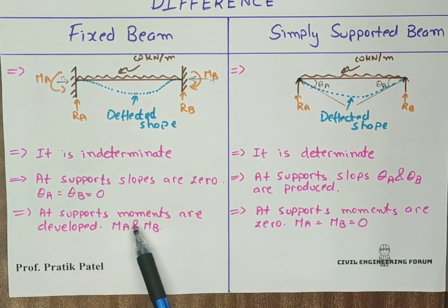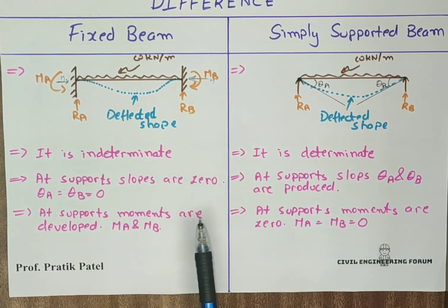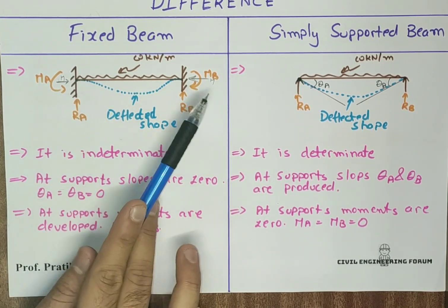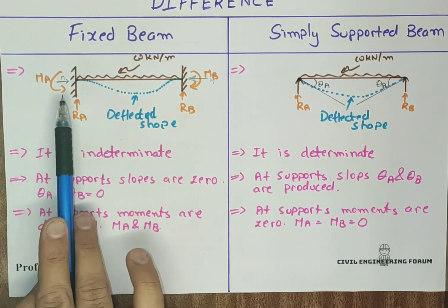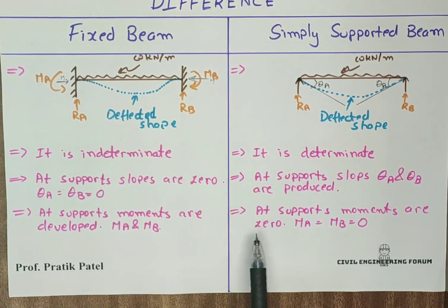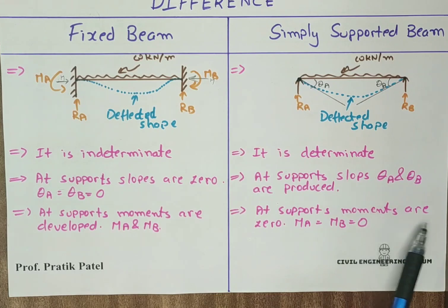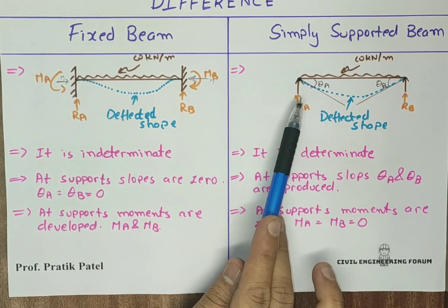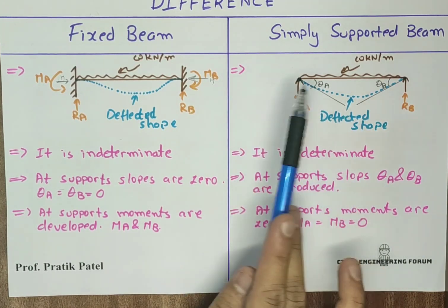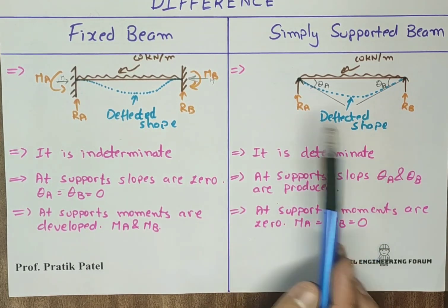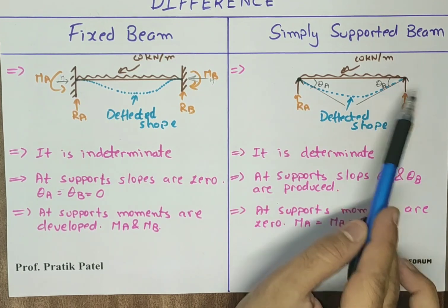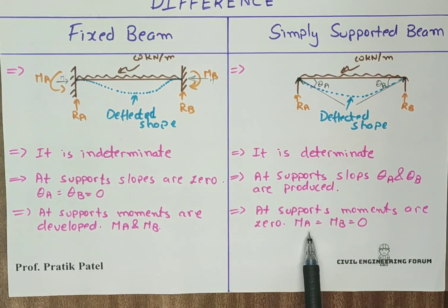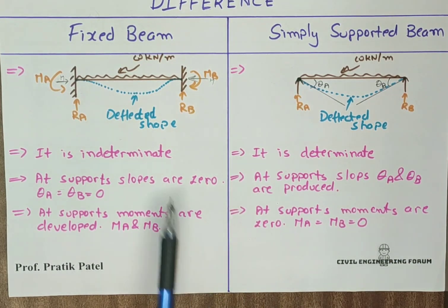At the supports of the fixed beam, moments MA and MB are developed — these are the reacting moments produced at supports. For the simply supported beam, moments at supports are zero: MA = MB = 0, because simple supports cannot take moments.